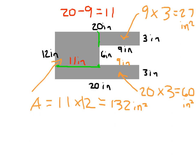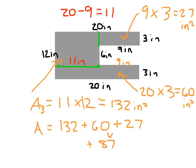For the total area, we add together all three areas: 132 plus 60 plus 27. 60 and 27 is 87, plus 132 equals 219 square inches. As you can see, in some cases you have to draw more than one dividing line, as long as you're dividing things into rectangles or squares. Carefully figure out which side lengths to use, then put all the areas back together.